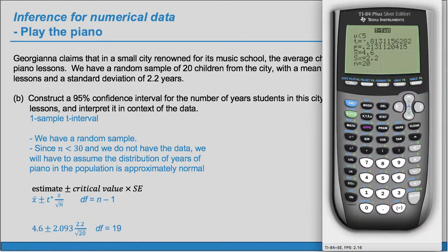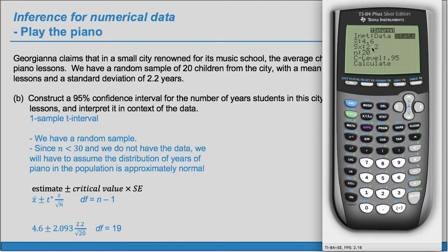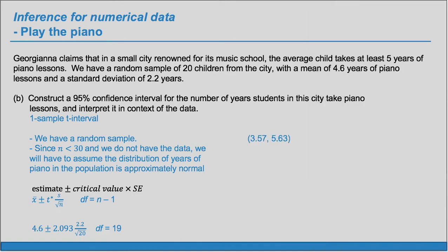On the calculator, go to STAT, TESTS, and choose T Interval — number 8. Again choose Stats. Because we just ran the test, our data is conveniently already entered. Make sure you choose the correct confidence level — in this case, 95. Calculate. This gives us our left and right endpoints. We can record those values: from 3.57 to 5.63.